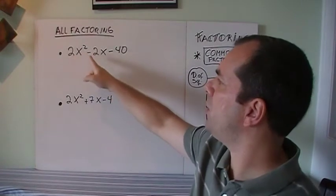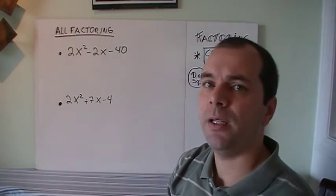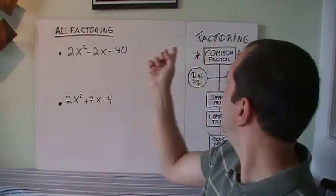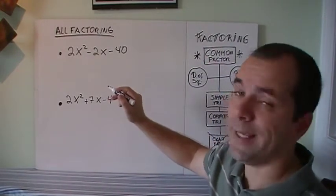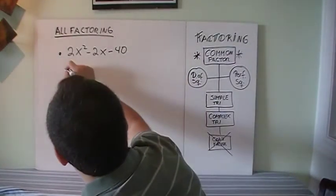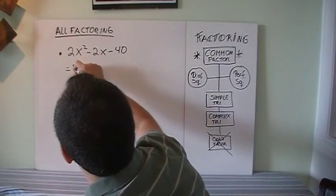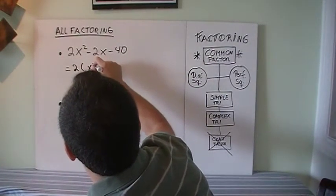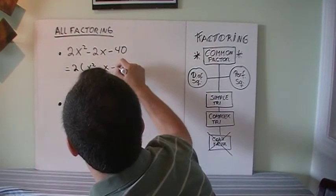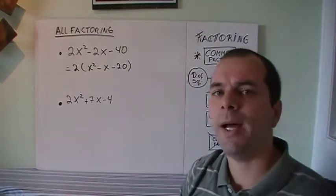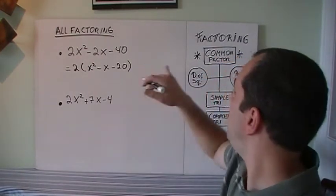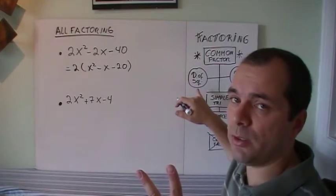If I've got 2x² - 2x - 40, what's the first thing that we do? Check for common factor. And there is common factor, and that's going to be I can take out a 2. So now we're left with x² - x - 20. Let's check, could it be a difference of squares? No, that's not two terms.